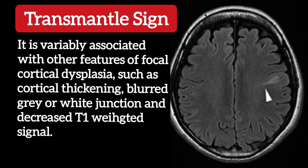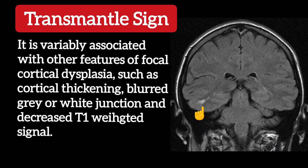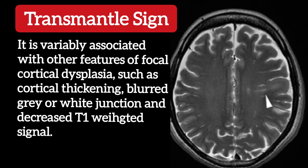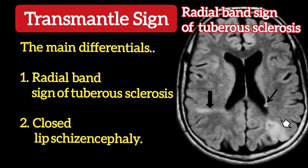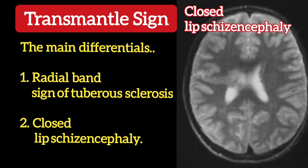It is variably associated with other features of focal cortical dysplasia, such as cortical thickening, blurred grey-white junction, and decreased T1-weighted signal. The main differentials are the radial band sign of tuberous sclerosis and closed lip schizencephaly.